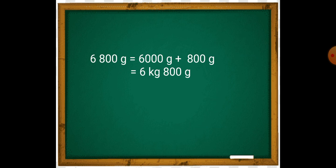6,000 grams is equal to 6 kg and 800 grams. So, the mass of potatoes is 6 kg and 800 grams.